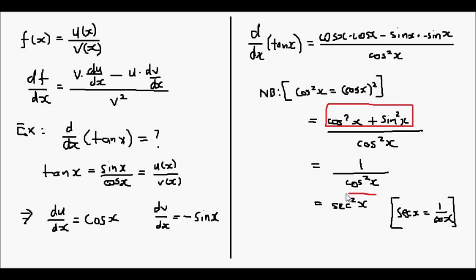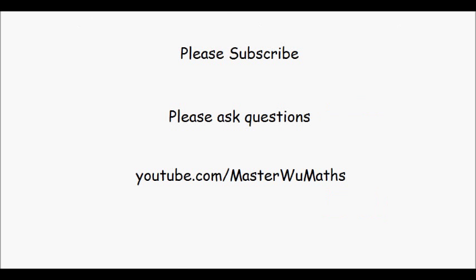So here's our answer: the derivative of tan(x) is equal to sec squared(x), using the quotient rule. If this video has helped you better understand how to use the quotient rule, please give me a thumbs up. If you are a math student, please feel free to subscribe for future videos that may help you on assignments or exams. If you have any question you'd like me to do a video on, please feel free to comment.